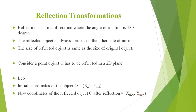First of all, we consider a point object O in the 2D coordinate plane. We initialize the original coordinates — that is, the x and y values of the initial coordinates of the original object. After reflection transformation, we calculate the x-new and y-new values for the same object.